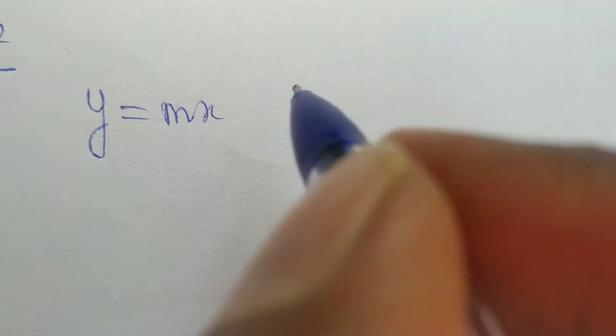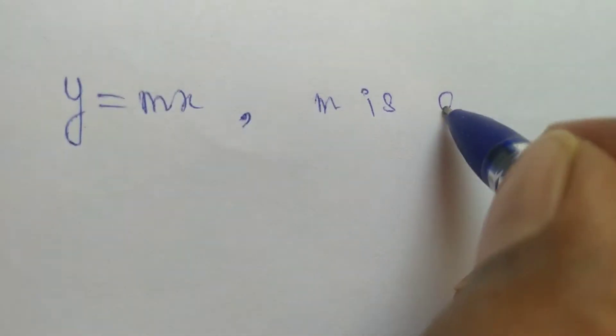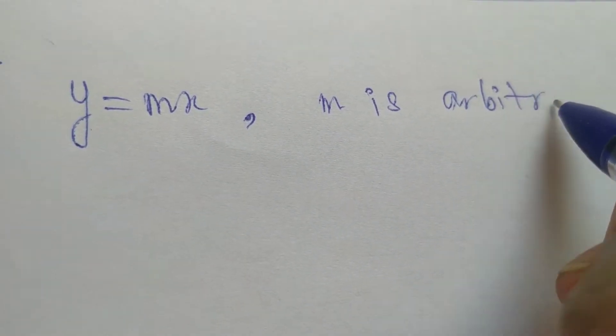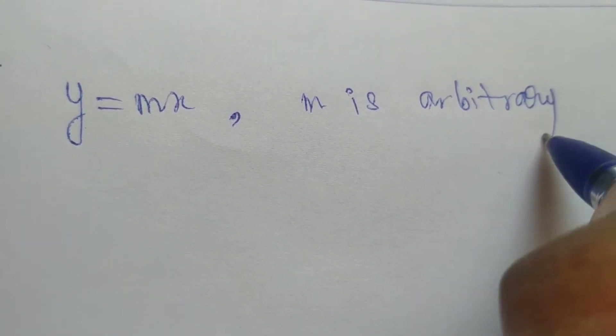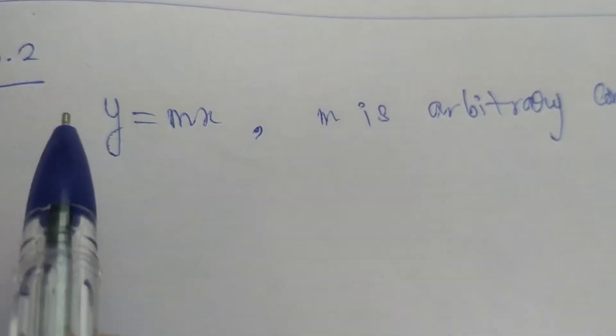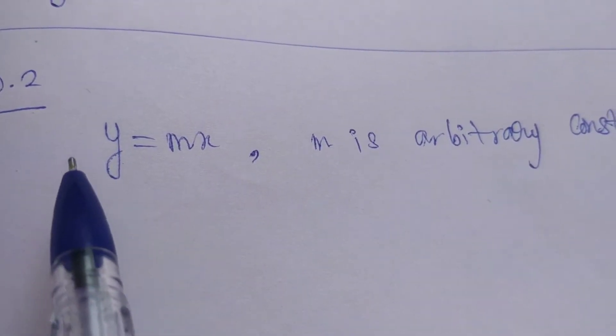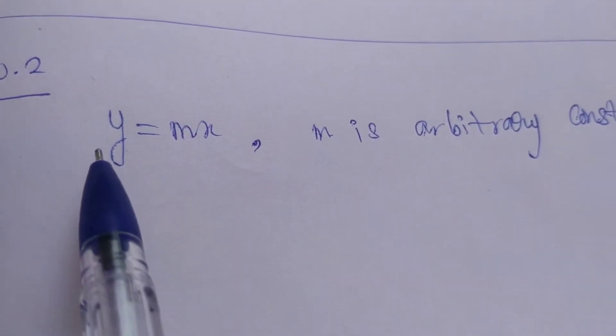Generally, we can select the equation of a straight line passing through the origin as y equal to mx. Here, m is the arbitrary constant. If we replace the values, the straight lines change, but all straight lines pass through the origin.